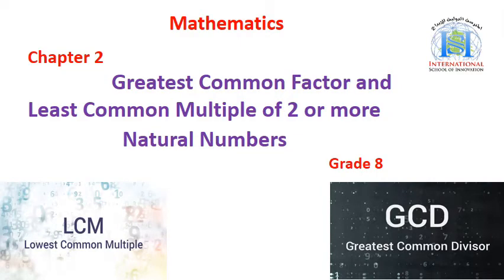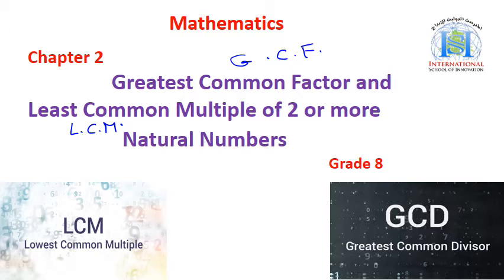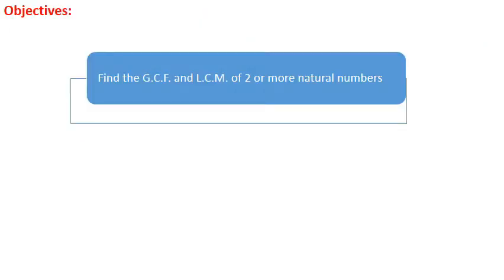Hi, my dear students. In this lecture, we are going to revise together our chapter 2, which is about the greatest common factor, the GCF, and the least common multiple, the LCM, of two or more numbers. If you still remember, last year we studied how to find the GCF and the LCM of two natural numbers. In this lesson, we are going to find it for two or more natural numbers. The objective of our lesson is to find the GCF and the LCM of two or more natural numbers.